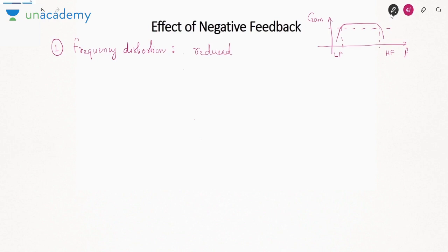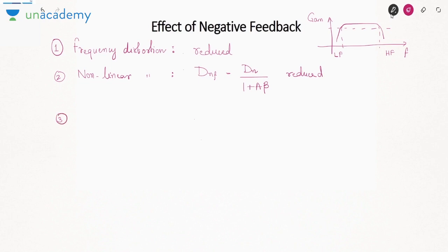The second reason is nonlinear distortion. If your network contains nonlinear elements like diodes and BJTs, their nonlinearity changes the shape of the signal — that is nonlinear distortion. Nonlinear distortion with feedback = nonlinear distortion / (1+Aβ), so it is also reduced. Nonlinear distortion is the change in shape of the signal due to the nonlinear nature of the devices used in the network.